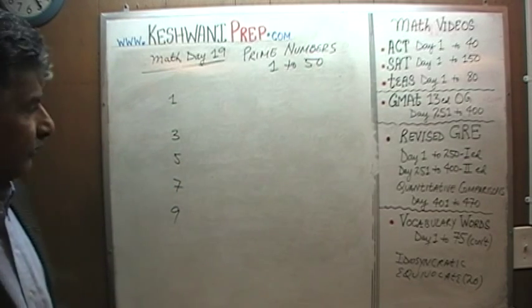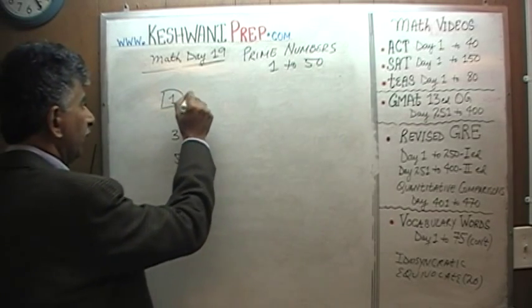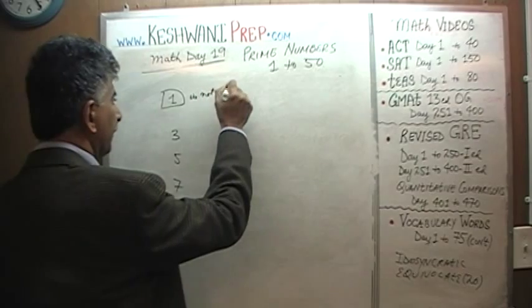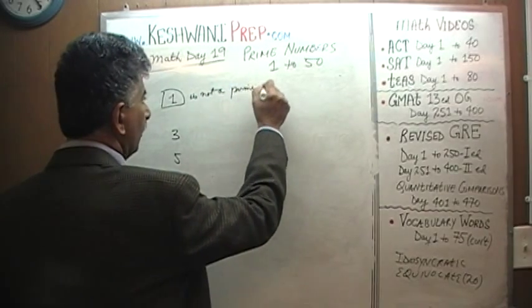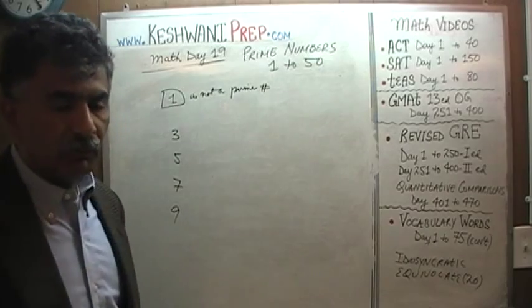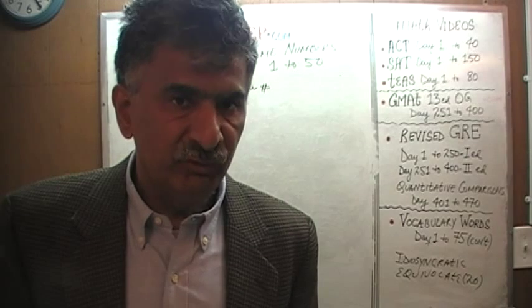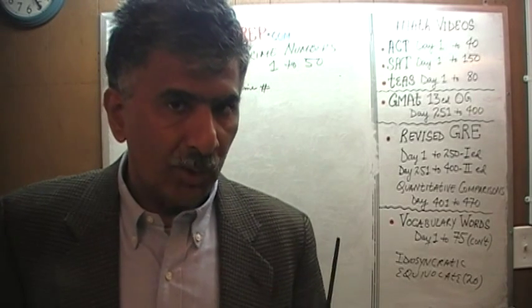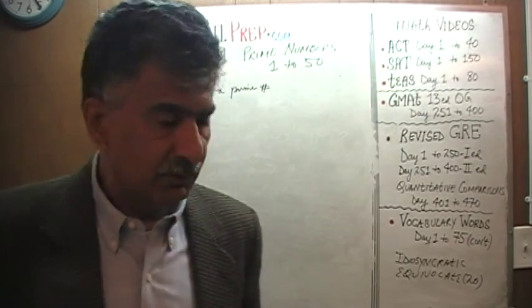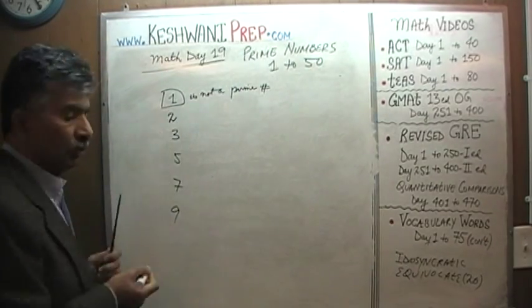First thing first: what we learned yesterday is that 1 is not a prime number. Why is 1 not a prime number? Because prime numbers are numbers that have exactly two factors — 1 and the number itself.